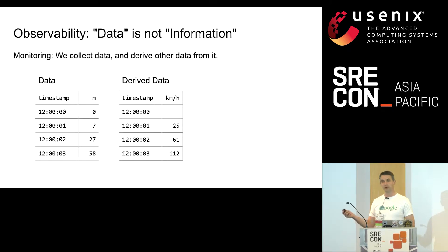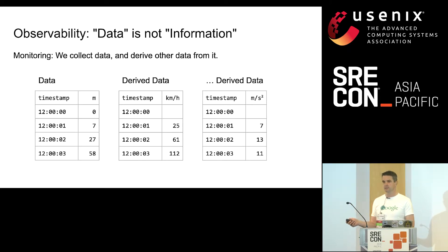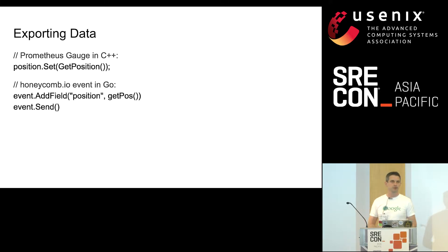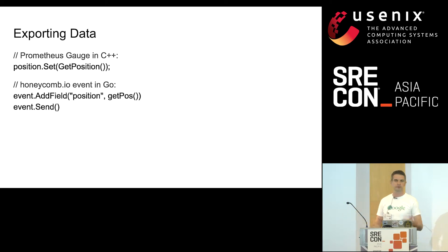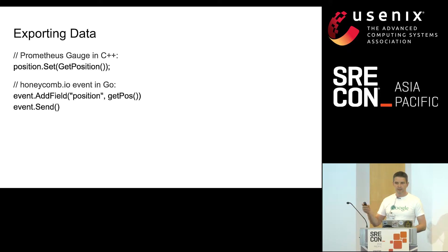We can derive more data by taking the rate again, and that gives us acceleration data. All of this is straightforward — these are the Hello World examples of monitoring. To export this kind of data practically: if you use Prometheus, you just set a gauge value to your current position. If you use Honeycomb — a third-party monitoring service provider — you just report events to them: 'I am here now.' This is data. We're just collecting data here.